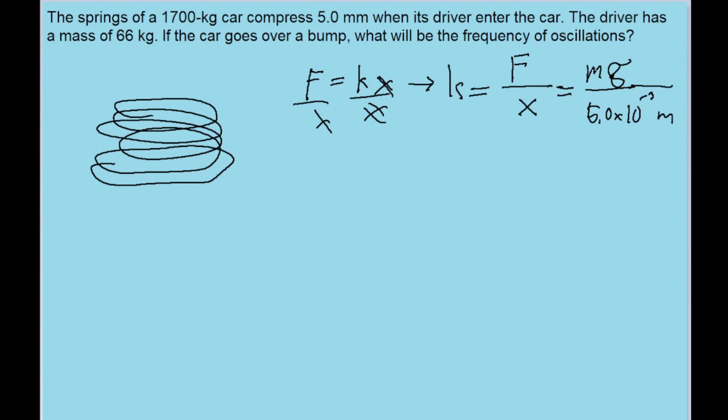So I'm going to use 66 kilograms for m, the mass of the driver, and 9.8 meters per second squared for g. And doing this, we find a spring constant of 1.294 times 10 to the power of 5 newtons per meter.